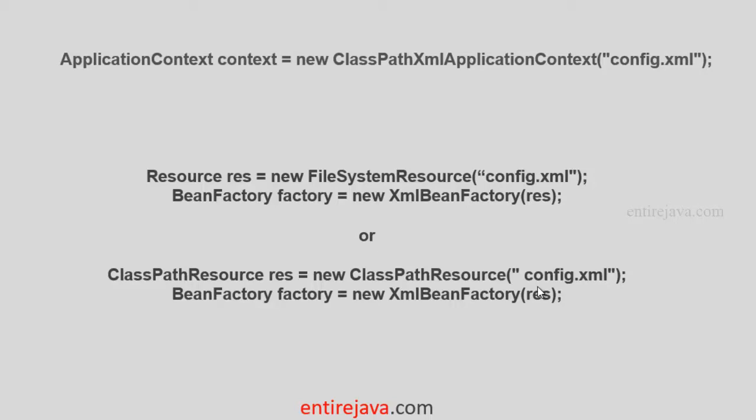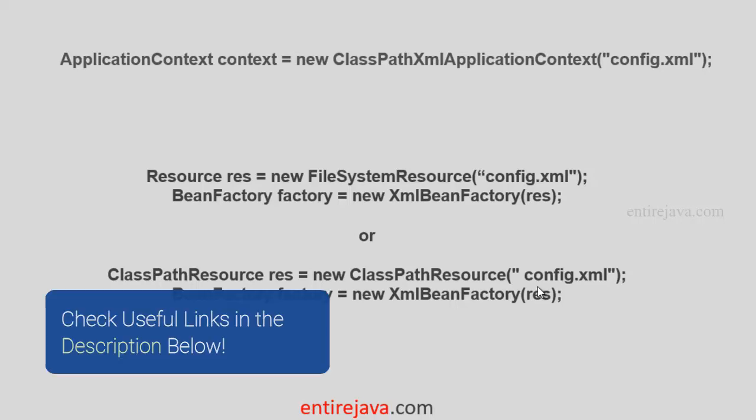But if you're using Bean Factory over Application Context, you have to sacrifice a lot of features that Spring offers. For example, you're limited to using only XML config files and you cannot use any annotation-based configurations. This is a serious problem, especially if you want to leverage Spring's auto-wiring feature, which we'll talk about in coming chapters. Also, Bean Factory would be a problem for internationalization, eventing, etc.